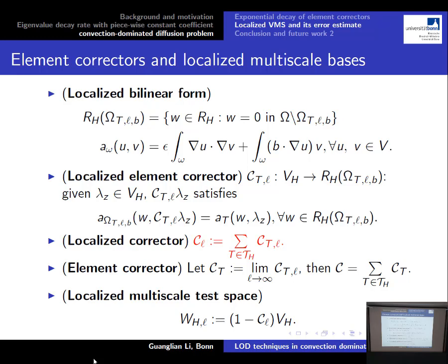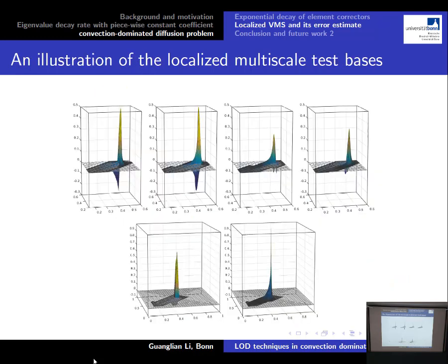The localized element correctors are defined by restricting the bilinear form to the element patches with L layers outside element T, where B is the velocity. We can sum all those element correctors on the coarse mesh together to get localized correctors with layer L. Taking the limit as L tends to infinity, we recover the element correctors in the global domain. For each nodal basis, there are four associated elements, so we solve four local correctors and sum them to get the localized correctors.